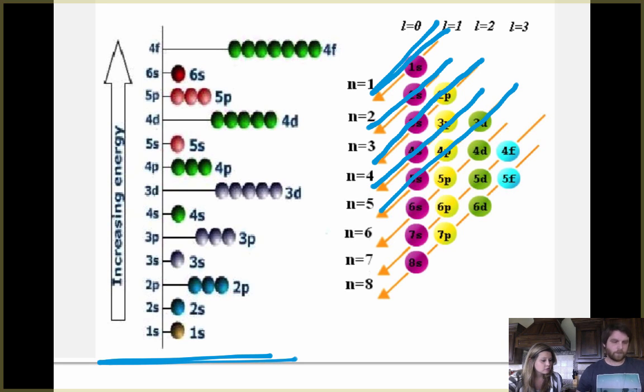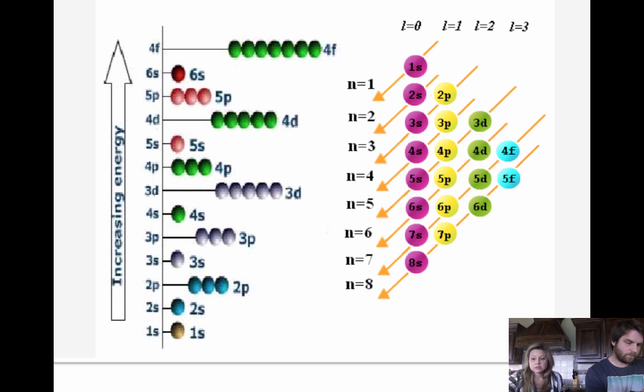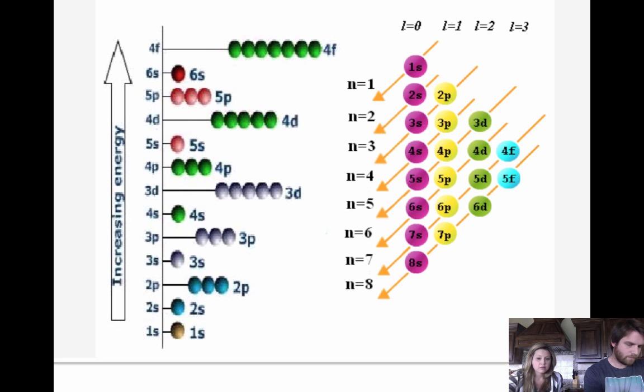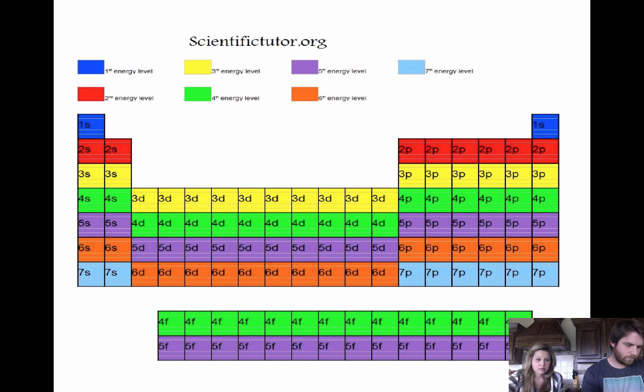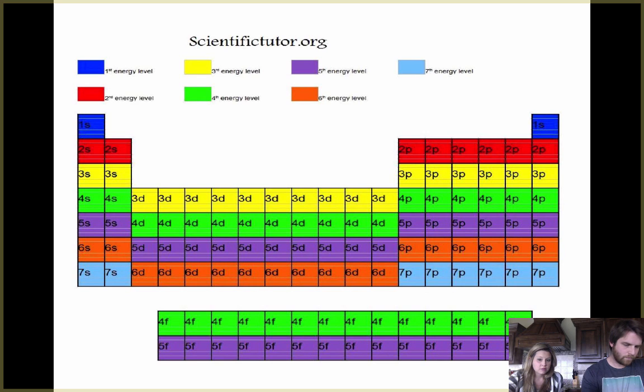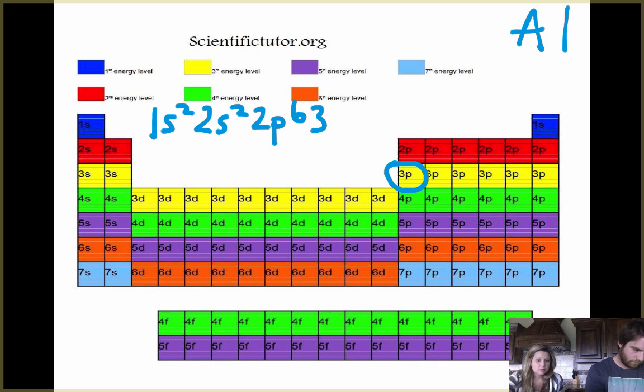So noble gas configuration, there is a shortcut. Let's do aluminum. So aluminum, I know ends at the three P one position looking at my periodic table. I know aluminum is right there. So let's write the whole configuration for aluminum. So it's one S two, two S two, two P six, three S two, three P one.